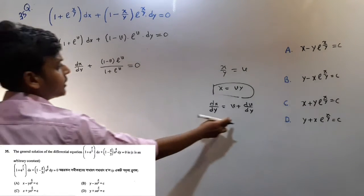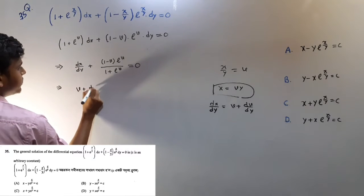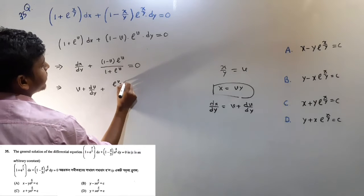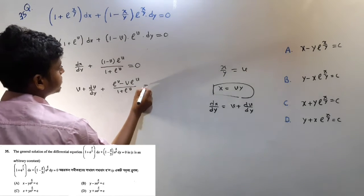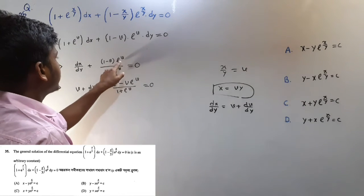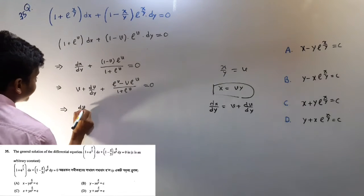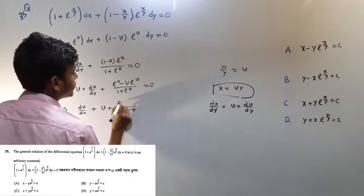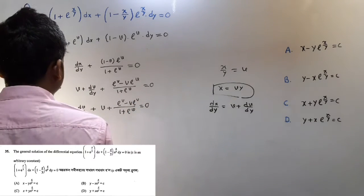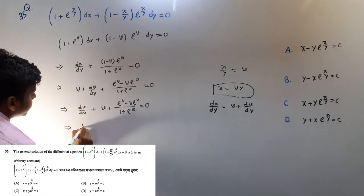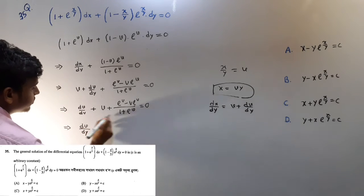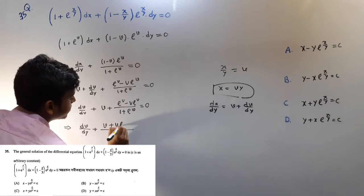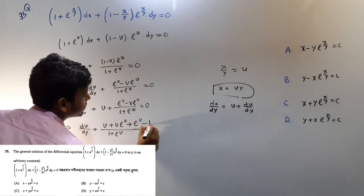So here we put the substitution. b plus db/dy gives us 1 minus e to the power b, minus b·e to the power v, divided by 1 plus e to the power v. Clear. So we take e to the power v to one side and v to the other side. This gives us the line: e to the power v, e to the power v minus b·e to the power v. So dv/dy plus e to the power v, and also e to the power v plus e to the power b minus v, into e to the power v.